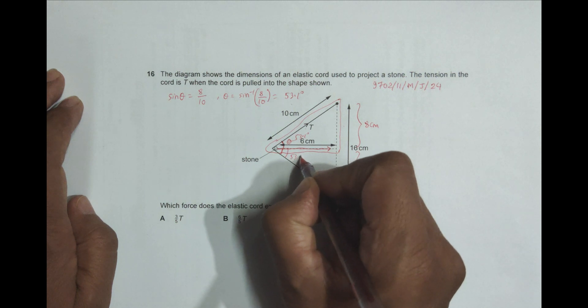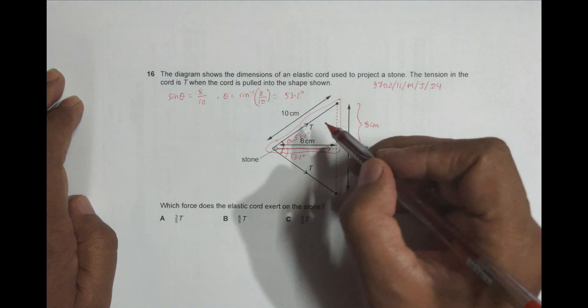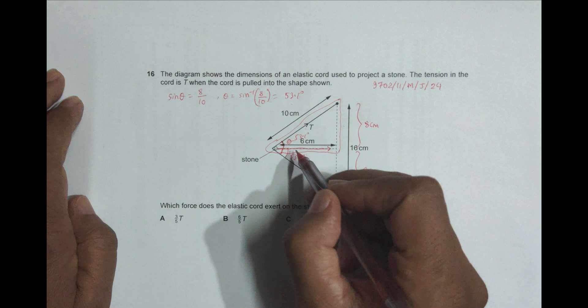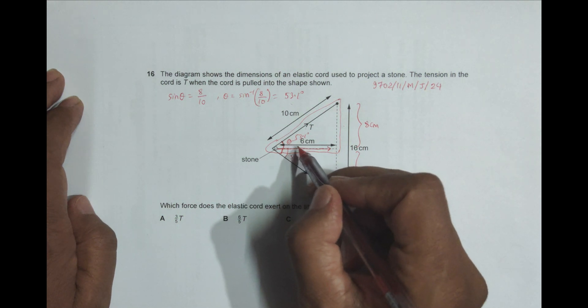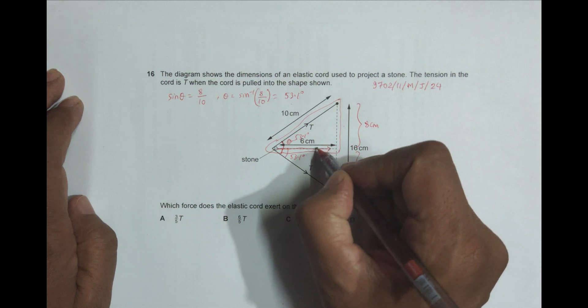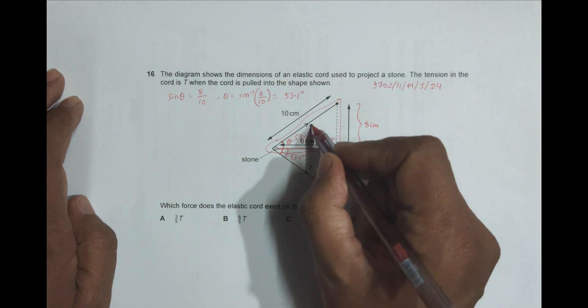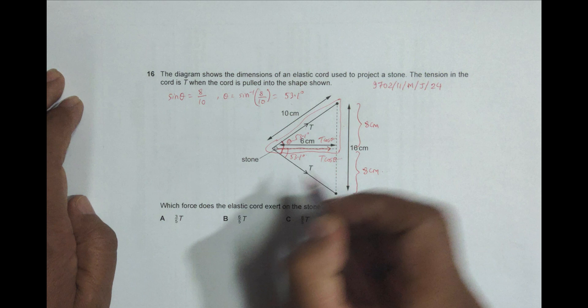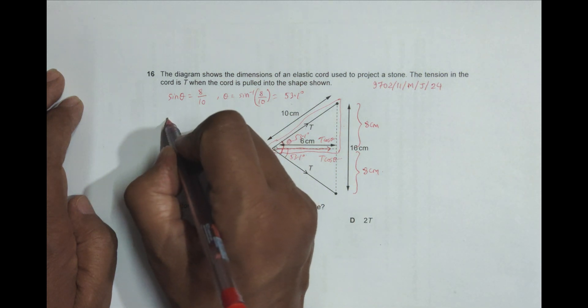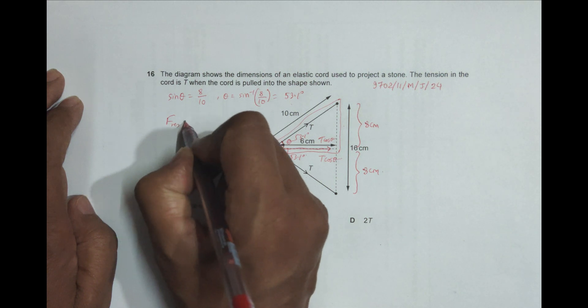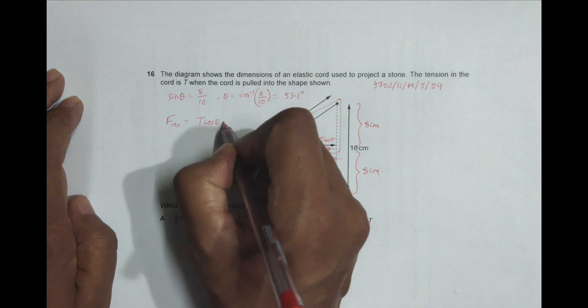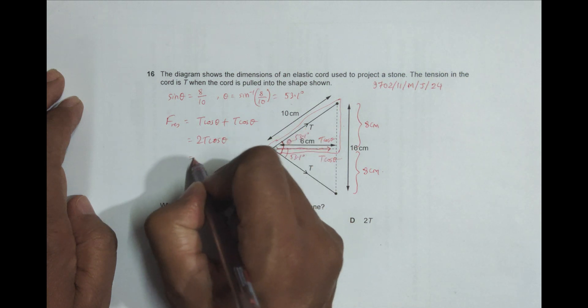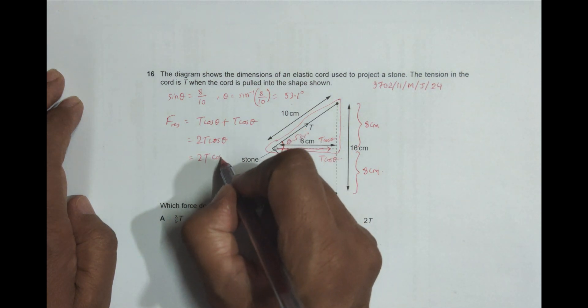Now the component of this T along this direction is T cos theta because the component in the direction of the angle is cos theta. So the component here is T cos theta because of this force, and because of this force also the component is again another T cos theta. So the total resultant force should be equal to T cos theta plus T cos theta, which equals 2T cos theta.